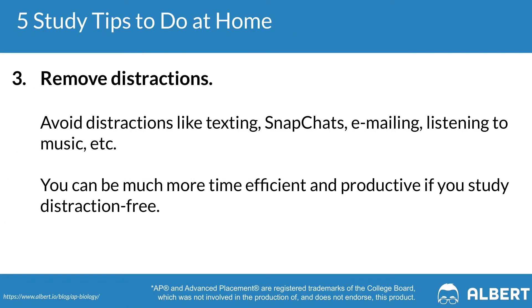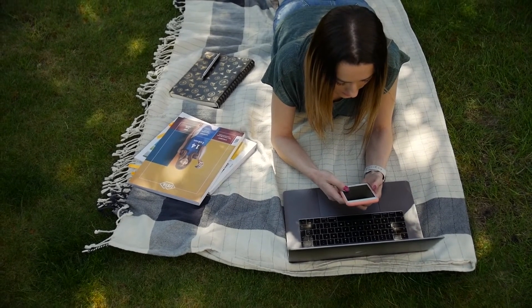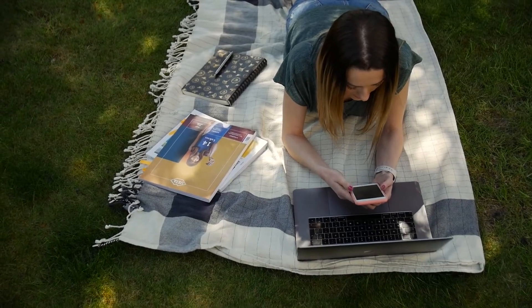Tip number three for at-home study tips is to remove all distractions. The easiest way to improve your focus is to limit the number of things that can potentially distract you. For example, study in a different room than where you leave your phone, or set a timer for 25 minutes of uninterrupted focus followed by five minutes of break. This method, known as the Pomodoro Technique, is a great way to get focused study time in while letting your brain recharge before resuming.